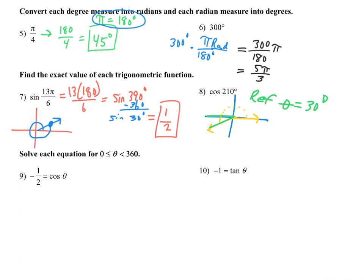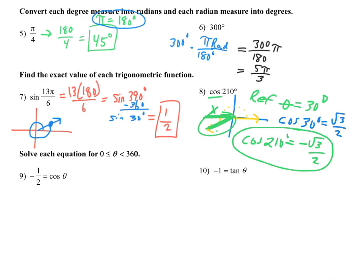So our reference angle is 30 degrees. What's the cosine for a 30-degree angle? You can either continue the unit circle pattern or think about where our angle actually is — our angle ended up in quadrant 3. Cosine is always the x-coordinate because the adjacent side is always along the x-axis. In quadrant 3 the x-values are negative, so the cosine of 210 is the same value as root 3 over 2 but negative. Cosine of 210 is negative root 3 over 2, because we knew its reference angle is 30.